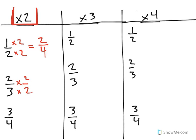2 thirds, when we multiply 2 times 2 in the numerator is 4, 3 times 2 in the denominator is 6. 2 thirds and 4 sixths are equivalent fractions, and so on and so forth. 6 eighths is equivalent to 3 fourths.